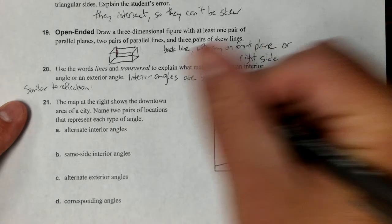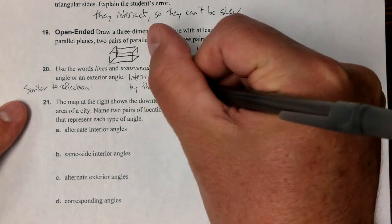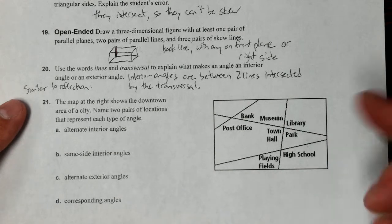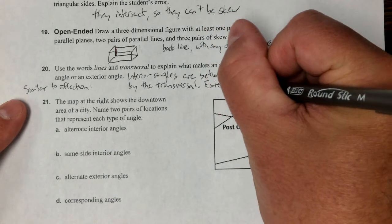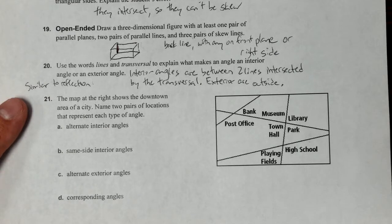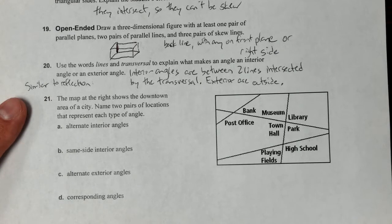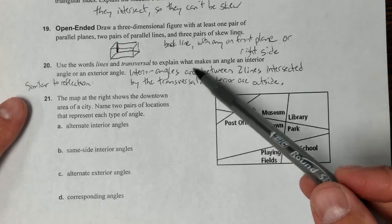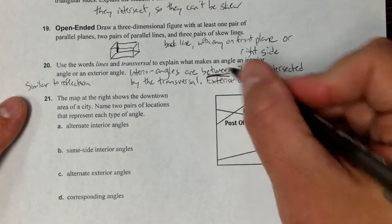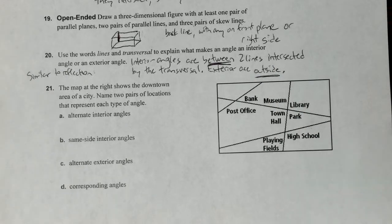Intersected by the transversal and exterior or outside. Exterior or outside, period. I could have kept writing and saying exterior angles are outside the two lines intersected by transversal, but since I put so much for the first part I think you can get it for the other. So the difference between the sentences: interior is between and exterior is on the outside.